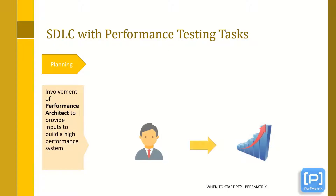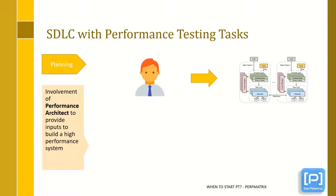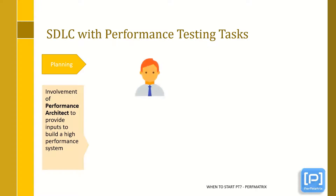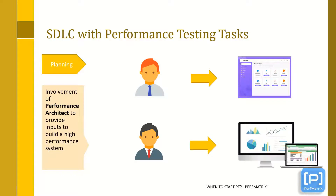One point to be noted here: performance architect and solution architect both have different roles and responsibilities. Solution architect prepares a plan or designs the core architecture of the software system. On the other hand, performance architect provides input to build a tuned software system. Solution architect thinks about the software solution according to client's needs, whereas performance architect thinks to make a software solution better in terms of performance.